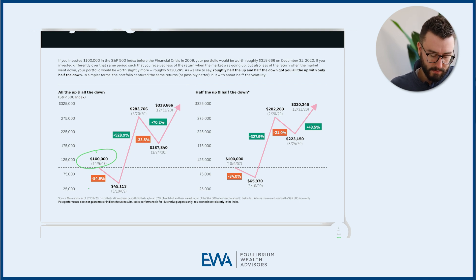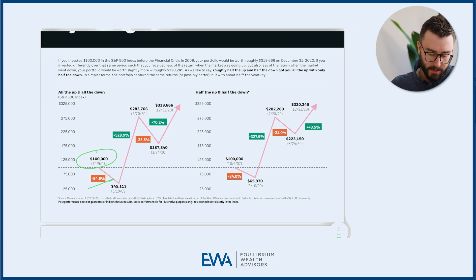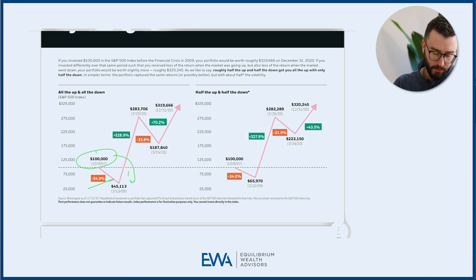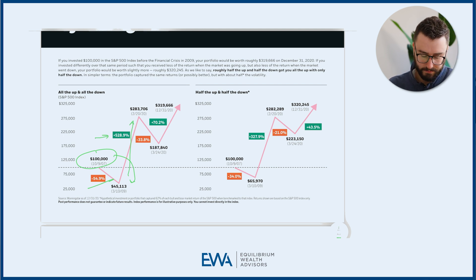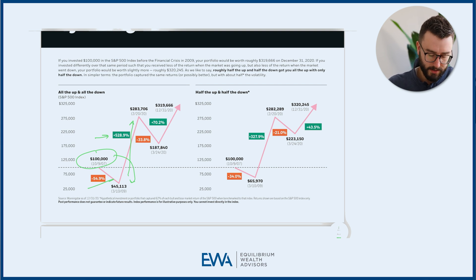After that time, the market went down 54.9%, so your $100,000 would have turned to $45,000. Then there's a big rebound from $45,000 up to $283,000 — a big return of 528% — followed by another downturn of 33%, and then back up.